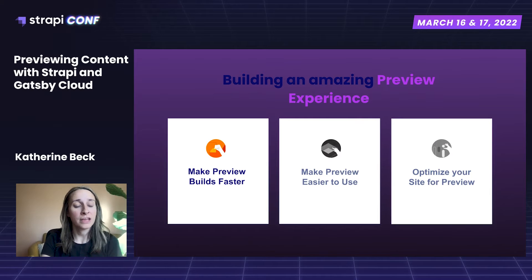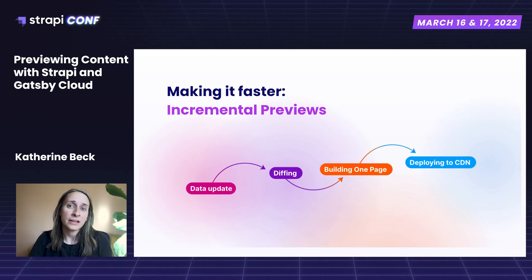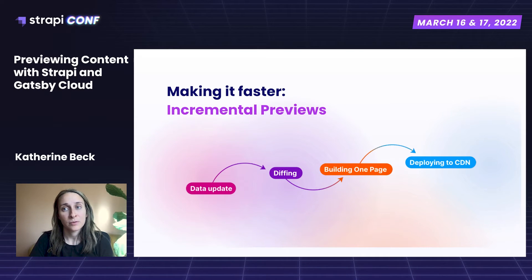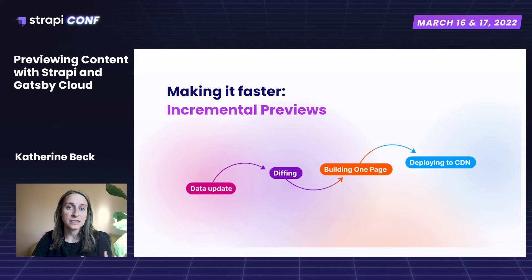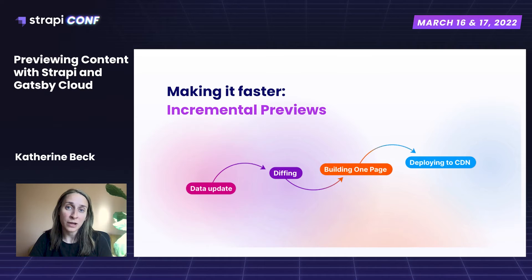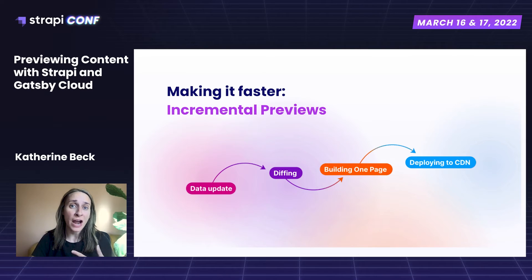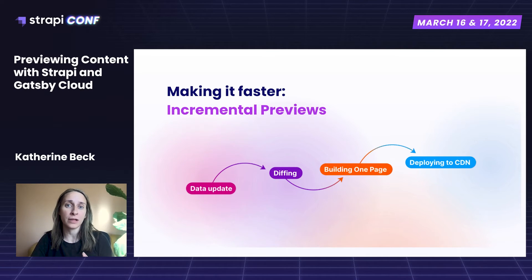So let's talk about making preview builds faster. The first concept here is incremental preview, or incremental builds for preview. This was previously something that was only available for production builds, but it's now available for preview, where it's often more important because you want to view those changes more quickly. The idea is that if you are just making a small update, you don't want to rebuild the whole entire site. So content editors push a data change to the CMS and Gatsby Cloud pulls those updates incrementally.